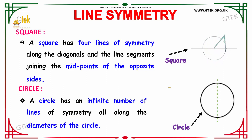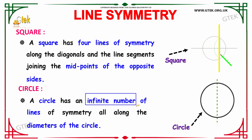Next, we have the circle. A circle has an infinite number of lines of symmetry, all along its diameters. As you can see, about any diameter of the circle, the circle is symmetrical.